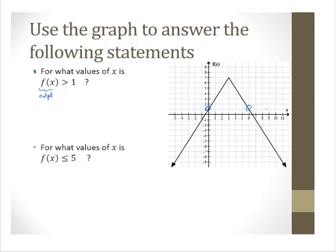It didn't ask us where the output equals 1 — it asks where the output is greater than 1. Notice that any of those points on the inside, which I'm now drawing in blue, have outputs greater than 1. What are those x values? They go from 0 to 6. As an inequality: 0 < x < 6. In interval notation: (0, 6).